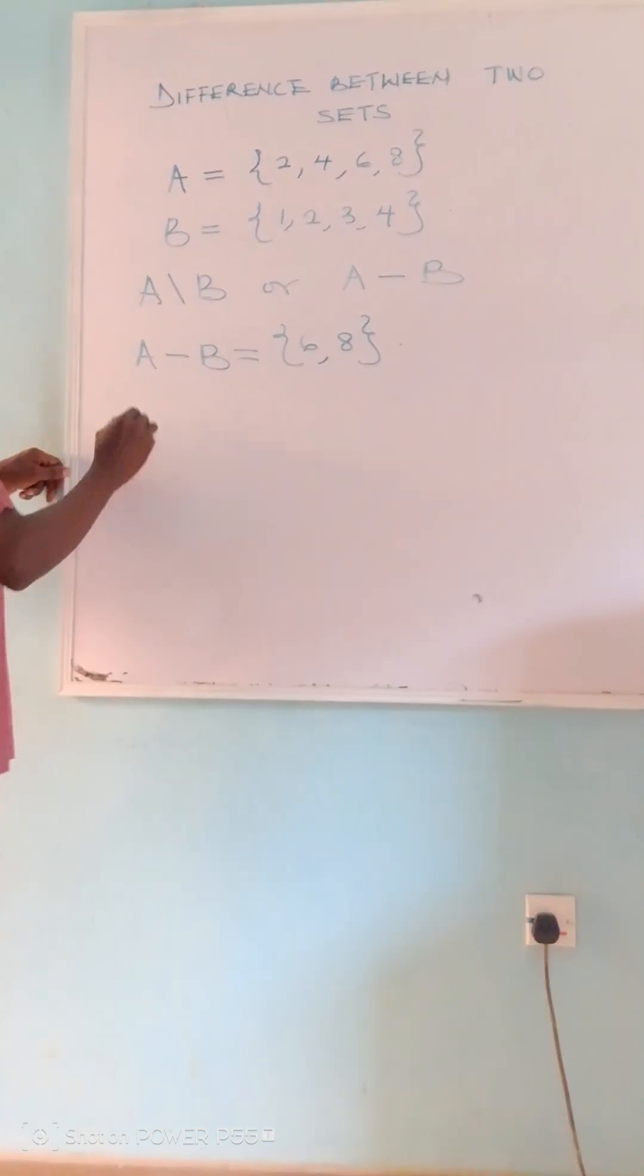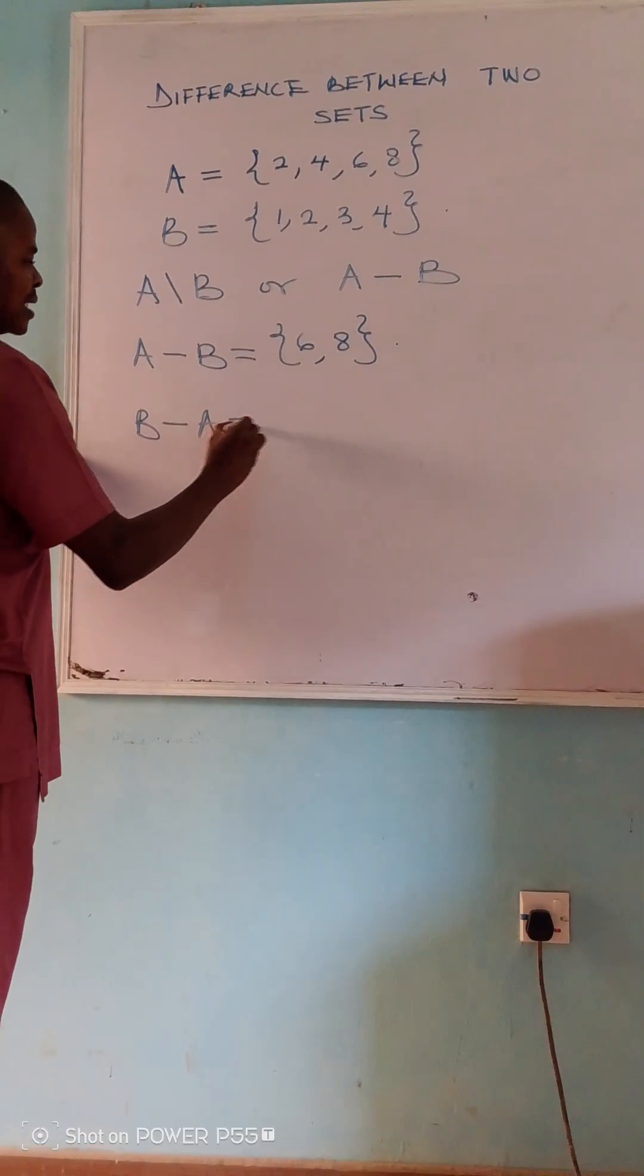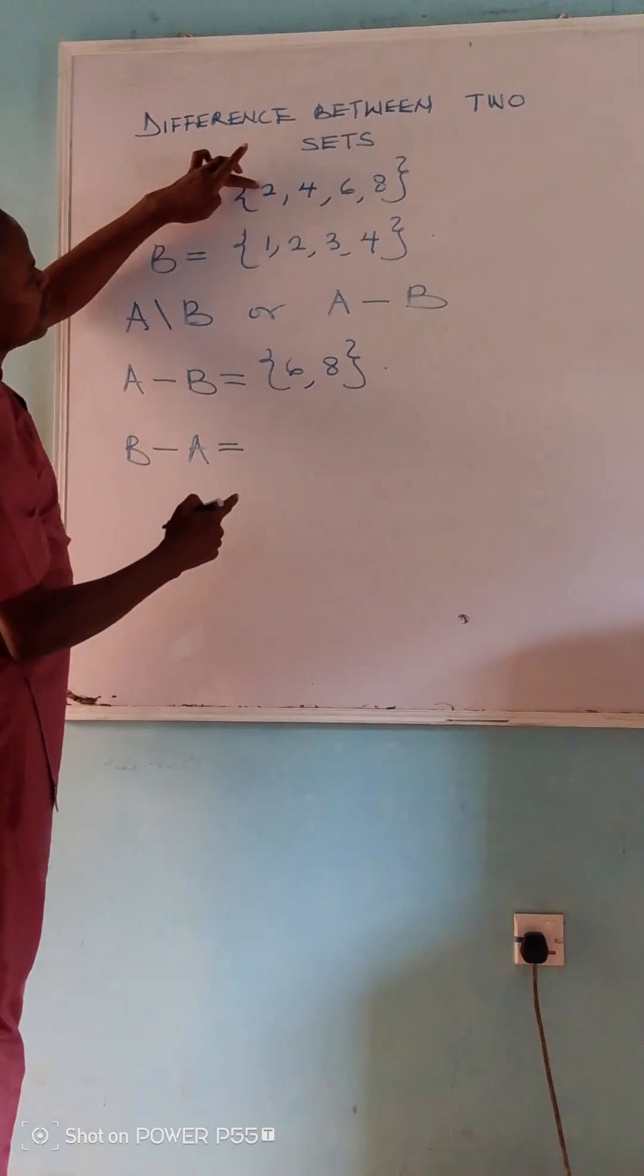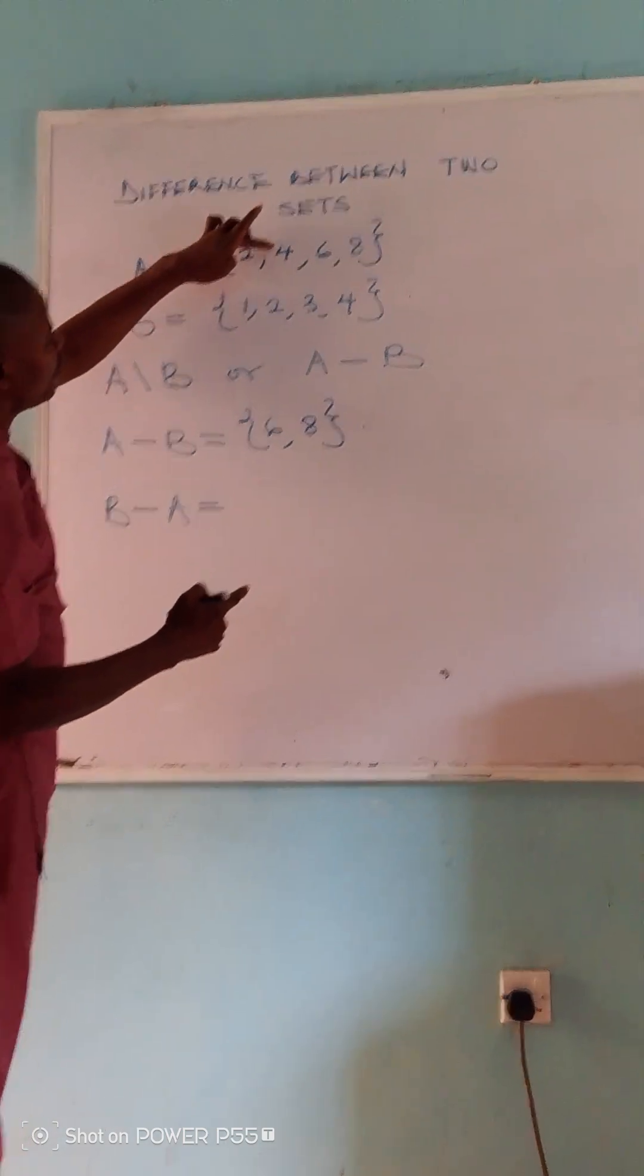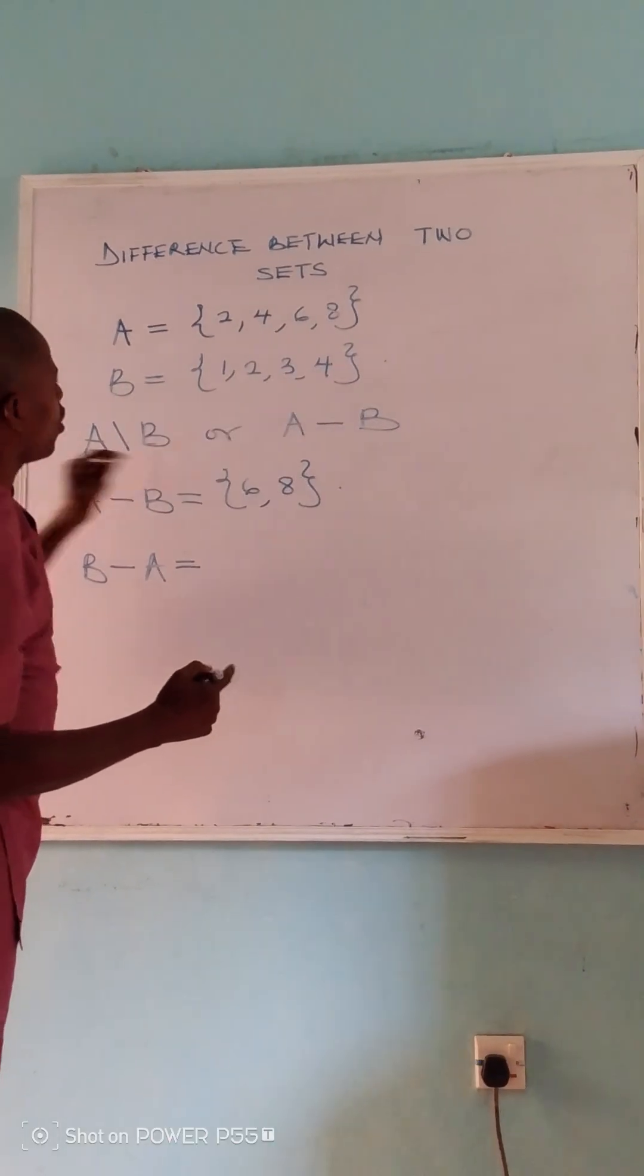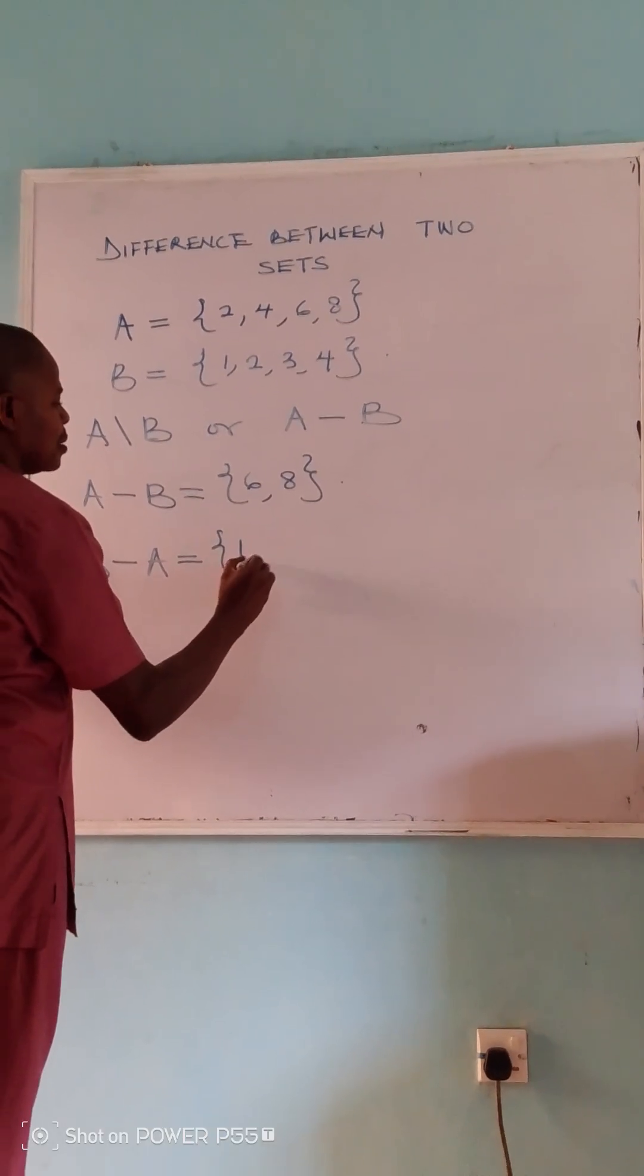I can also find B minus A. That is, I want to remove A from B. So I'll remove the 2, I'll remove the 4, the 6 and the 8. So what is left will be equal to {1, 3}.